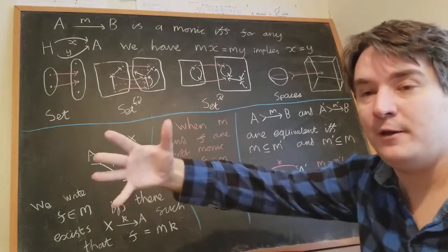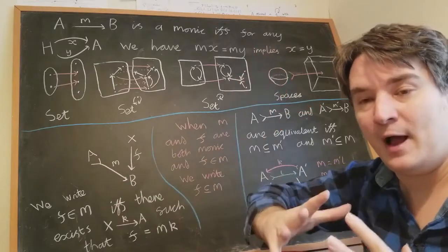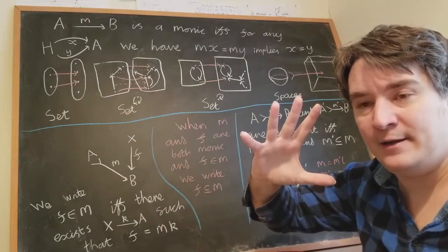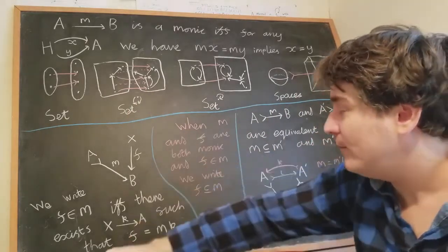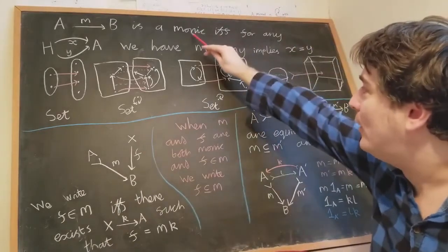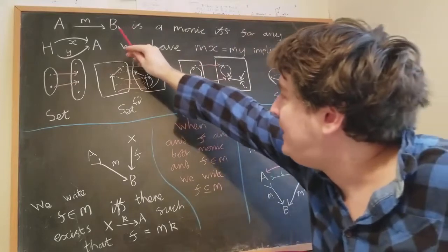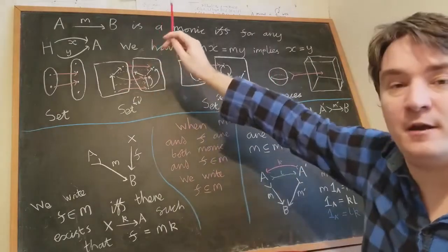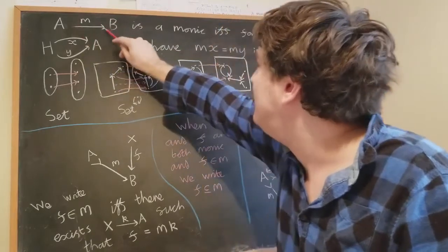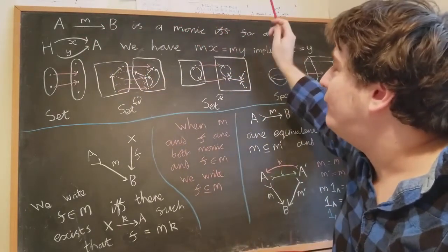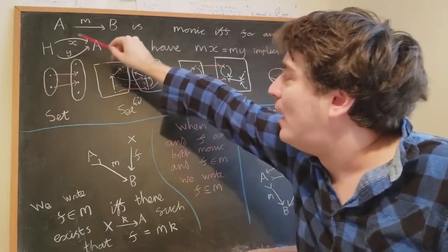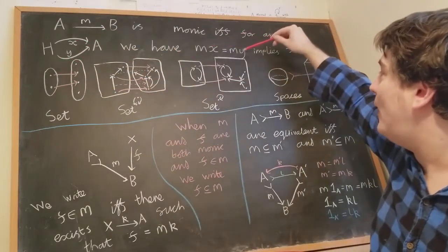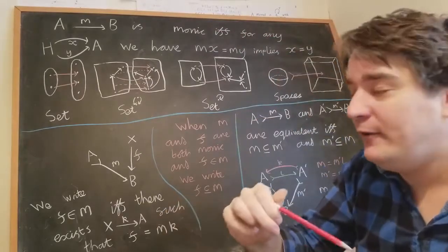I want to review some of the most important ideas about sub-objects — essentially the idea of parts in categories. Our basic idea of what a sub-object is: it's a monic. A sub-object of b is a monic into b. A monic is just another word for a monomorphism. The definition is that an arrow m from a to b is monic if and only if for any pair of arrows x and y from any object h into a, if m after x equals m after y, then x equals y.